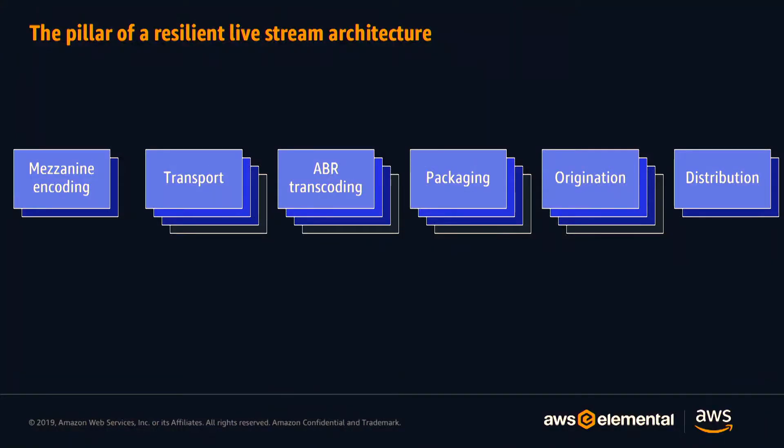The traditional way of getting live streaming workflows to be more resilient and reliable is to duplicate those steps — having multiple components or multiple pieces of infrastructure doing every step along the chain, and then having failover be switching from one set of components over to another. The cloud gives you an interesting alternative, rather than going from a light blue to a dark blue to a darker blue and having failover do nothing but switch between entire legs.